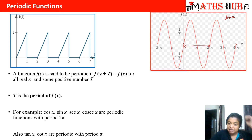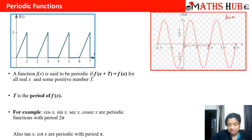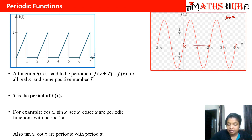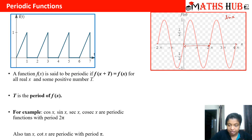Whereas tan x and cot x have period π. You can check their graphs: for sin x, cos x, sec x, and cosec x, after an interval of 2π they behave the same. But when you check the graphs for tan x and cot x, you will find that after the period π, they behave in a similar way.